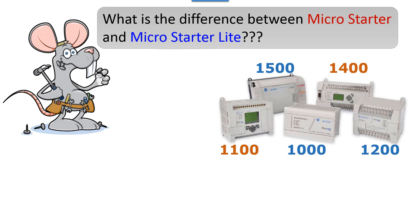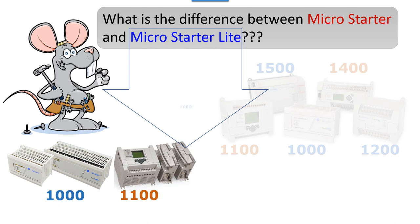MicroStarter is a stripped-down version of RSLogix 500, but the only thing stripped down is that you cannot create a project using any SLC 500 controllers. With MicroStarter, you can develop programs for any of the five MicroLogix processors. What's the difference between MicroStarter and MicroStarter Lite? MicroStarter Lite will only program the 1000 and the 1100. With a full RSLogix 500 license, you get dozens of processor choices. With MicroStarter, you get the five MicroLogix. With MicroStarter Lite, which is free, you can only pick from the 1000 and the 1100.